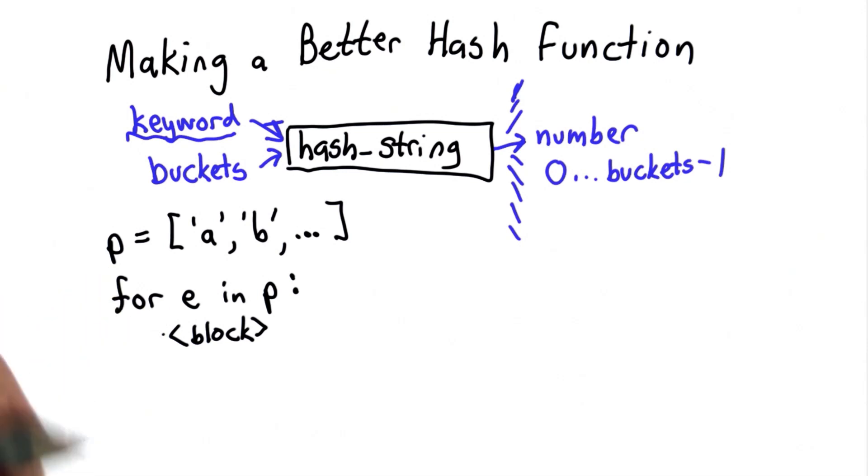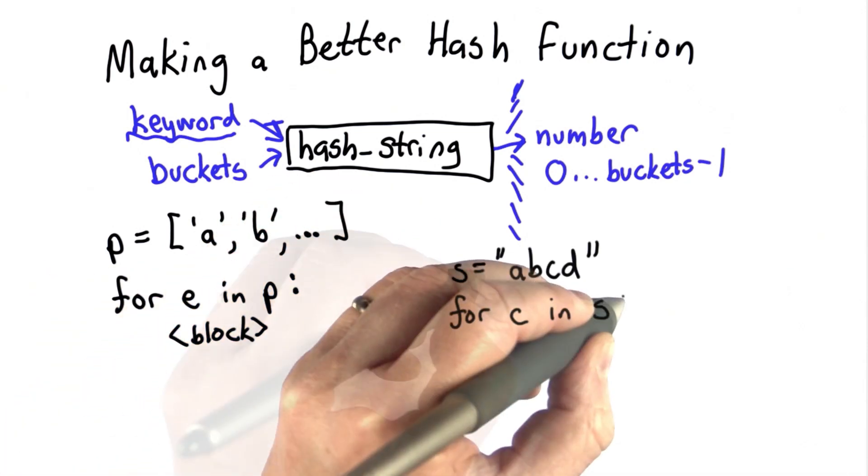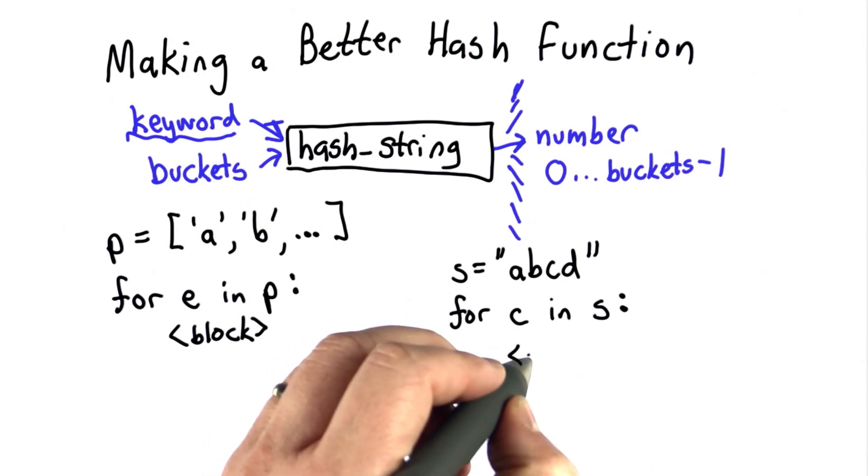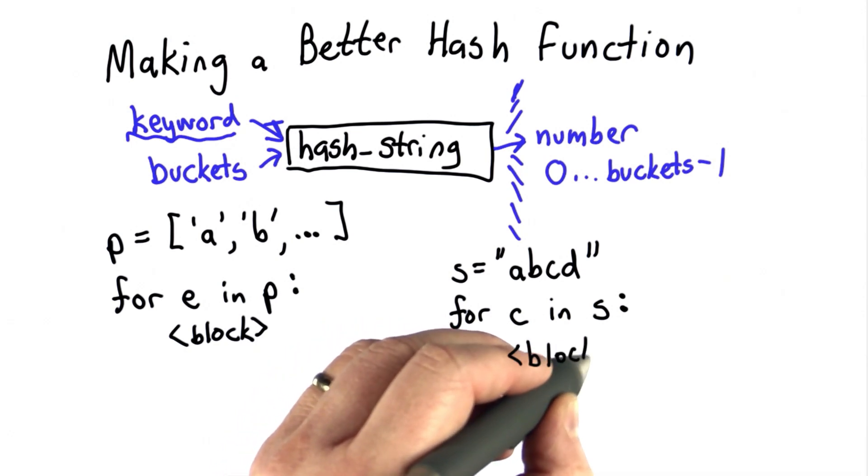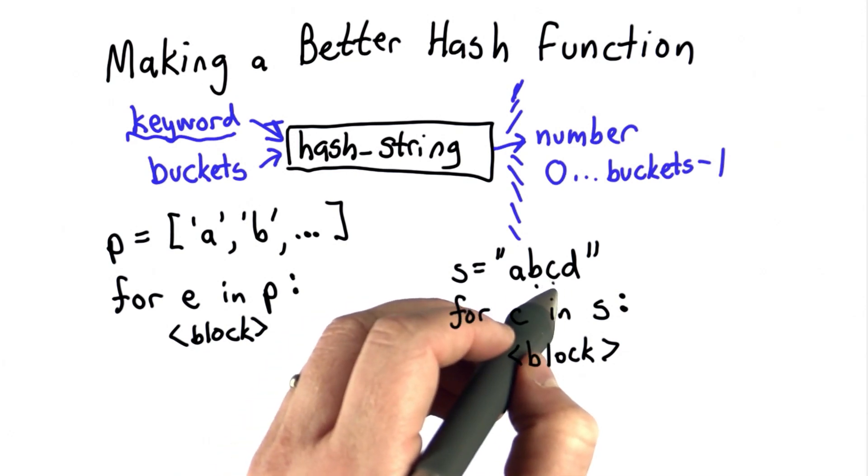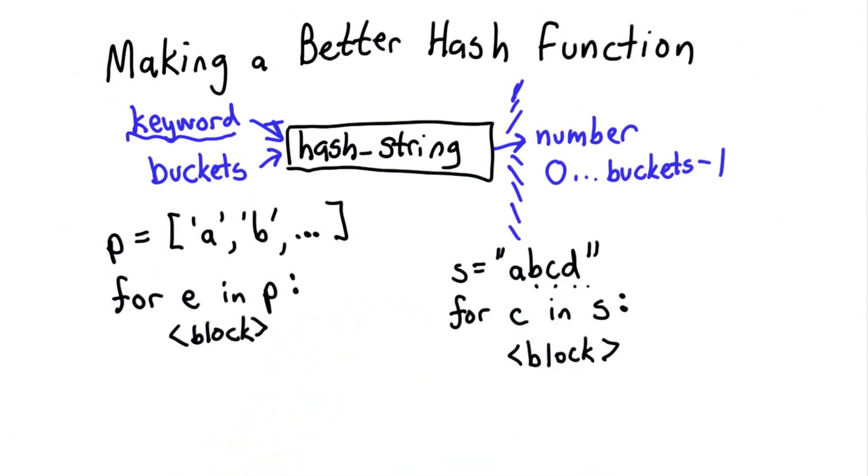We can do something similar with strings. If we have a string s, we can use the same construct to go through the characters in s. Each time we go through the loop, the value assigned to variable c will be a one letter string corresponding to each character in the string in order. First it will have the value a, then b, then c, then d. This gives us a way to go through all the elements in the string.